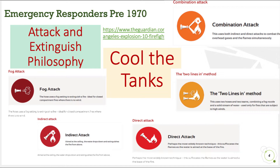Before the 1970s — and maybe even in that last example — the philosophy of firefighters was to attack and extinguish: cool the tanks using fog to capture vapors, indirect attack such as a deluge system from the ceiling, a direct attack with hoses, a combination toon-line method, or fighting from the bottom and top as in wildfires. But all of these are simply combinations of attacking, and we have to step back and really look at what's going on inside the incident.